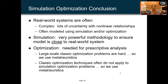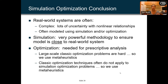Wrapping up the simulation optimization methodology: real-world systems are very complex, often modeled using simulation or optimization. Simulation is a powerful methodology to get as close as possible to a real-world system, while optimization is needed for prescriptive analysis to find your optimal solution. The combination — simulation optimization — uses software that automates the iterative process: input parameters go through the simulation, outputs are collected, going back through the optimizer and back through the simulation in an automated fashion, lessening the labor-intensive work for the analyst.